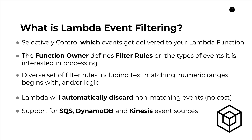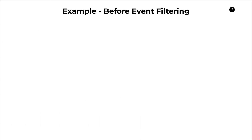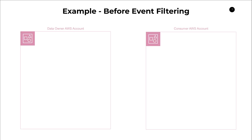This may not seem like a big deal at face value, but I assure you this is a very useful feature. Let me walk you through an example to demonstrate why. First I want to talk about an example before event filtering to show you what we used to have to do. In this example, say we have two different AWS accounts — on the left hand side a data owner AWS account, the publisher of the data, and on the right hand side our consumer AWS account that is interested in processing that data.